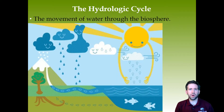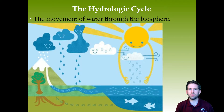The first of the biogeochemical cycles we're going to look at is the hydrologic cycle. This is a cycle you've probably heard of from even kindergarten — we've got rain, evaporation — it's really just the movement of water through different processes. Let's take a more in-depth APES view of this process.